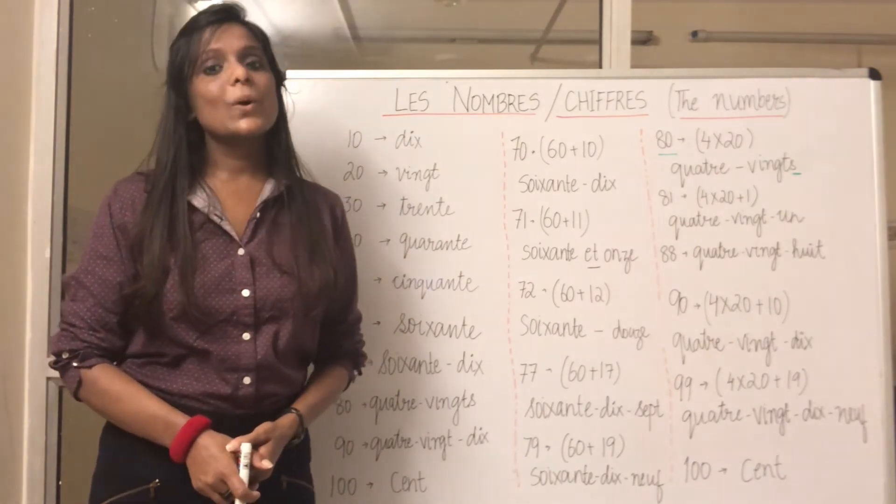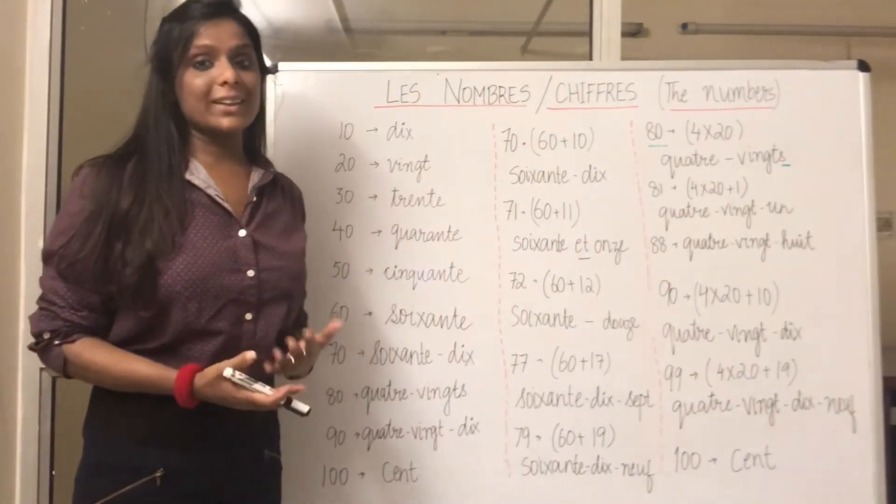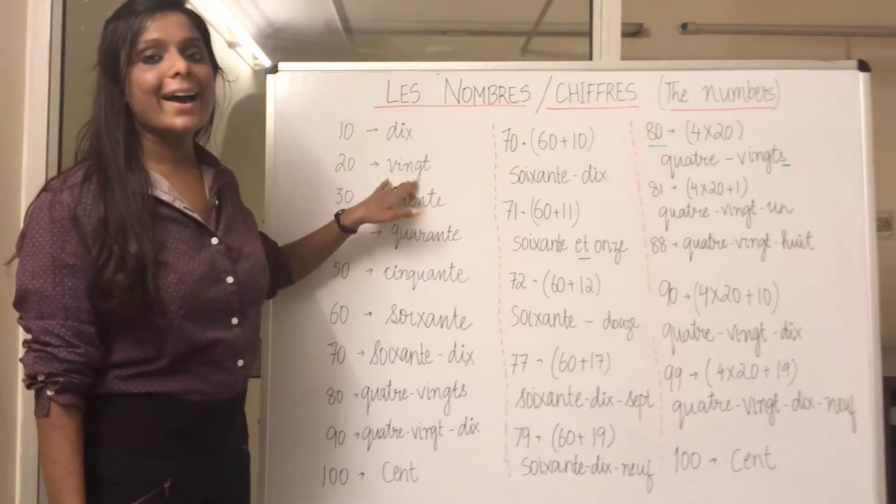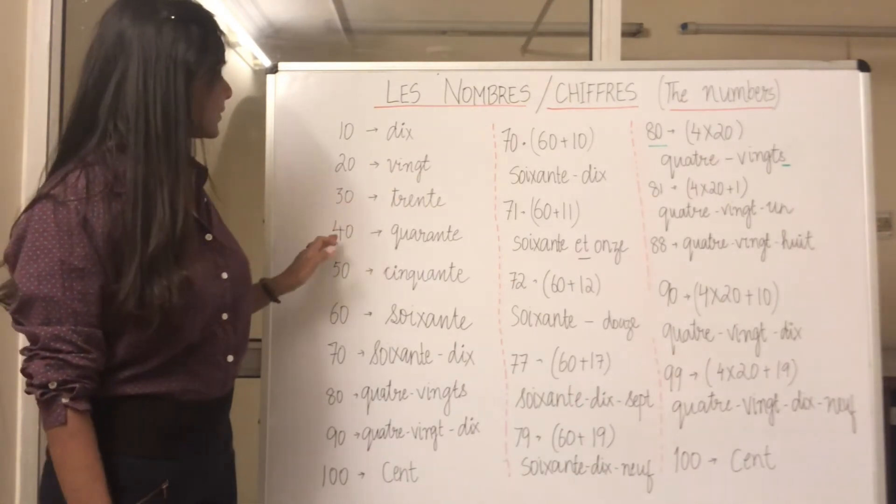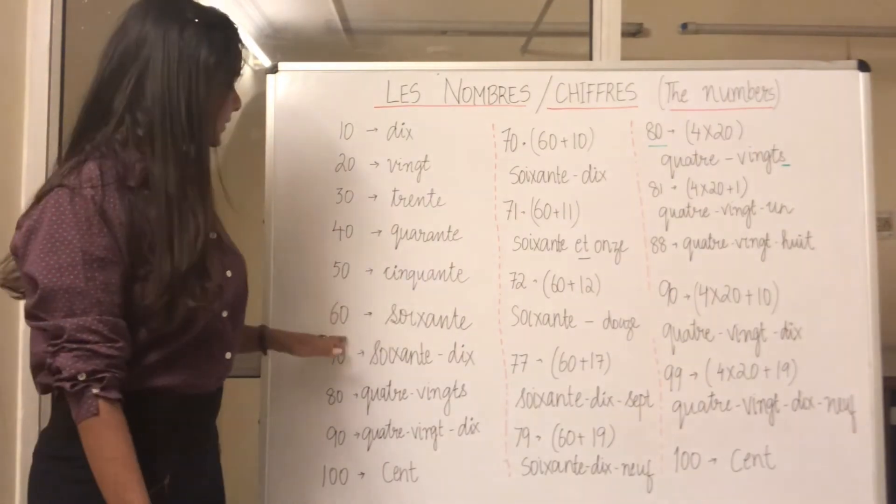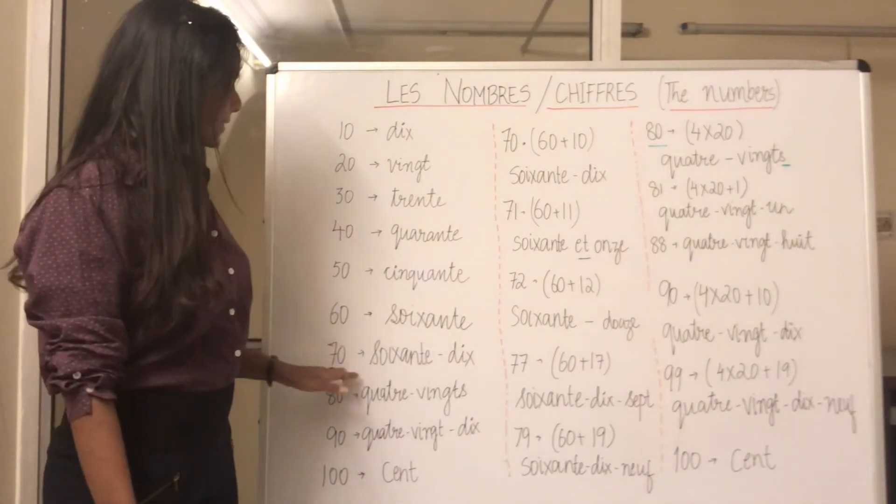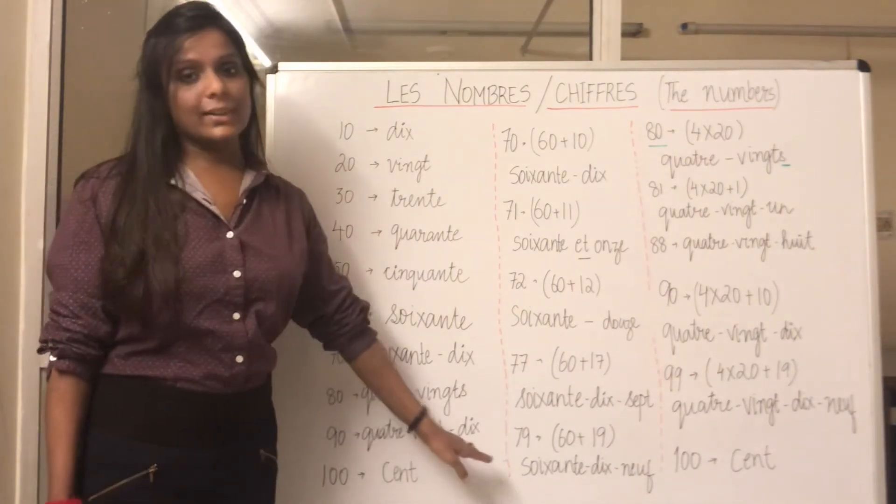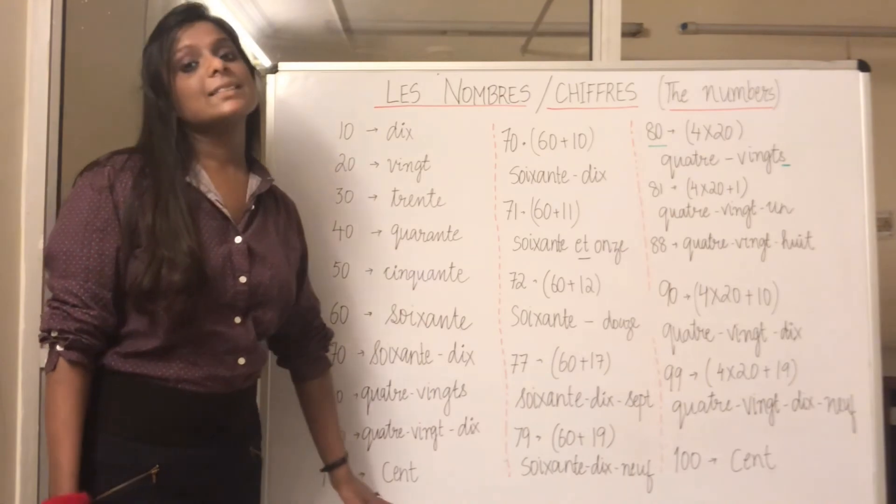So let's just recapitulate once. 10 is dix, 20 is vingt, 30 is trente, 40 is quarante, 50 is cinquante, 60 is soixante, 70 is soixante-dix, 80 is quatre-vingts, 90 is quatre-vingt-dix, 100 is cent.